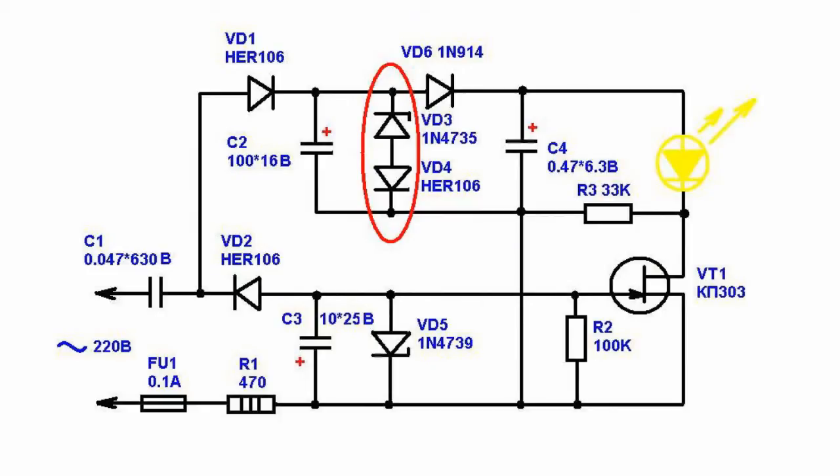In case of unwanted voltage fluctuations, capacitor C2 eliminates current surges using VD3 and VD4.